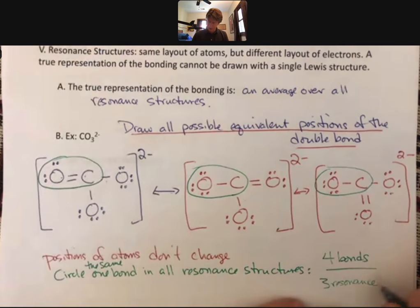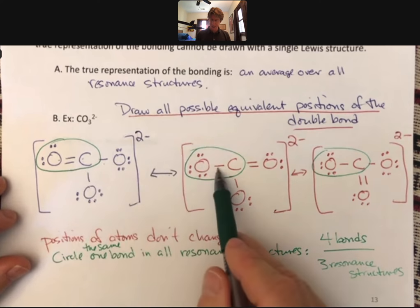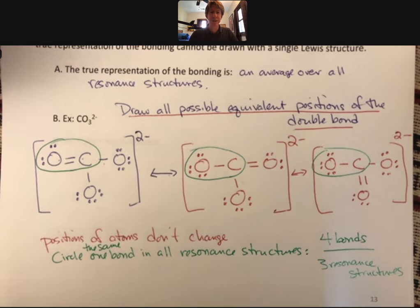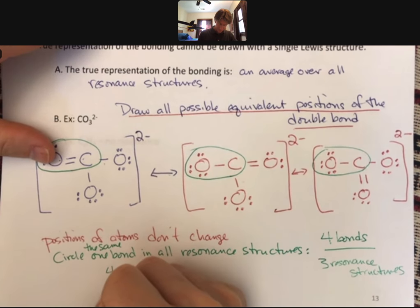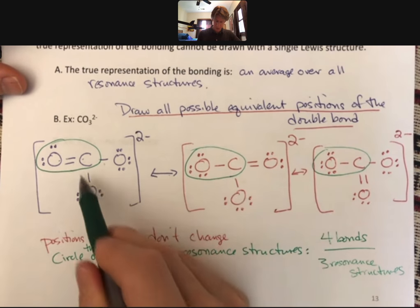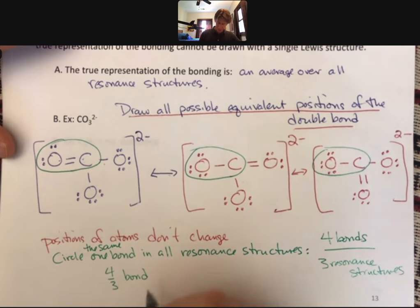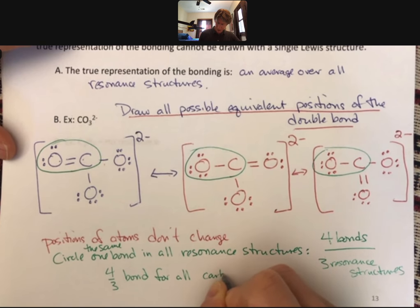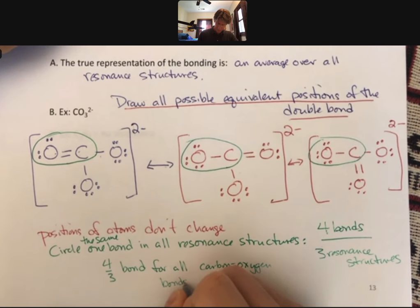And yes, I'm running out of green ink. And so what we would say is that this bond that I've just circled is somewhere between a single and a double bond. And what we would actually call it is we would call it a four-thirds bond. Meaning, a single bond would be one, a double bond would be two, and this is somewhere between them. And then if we do the same thing for the other ones, we'd have one, two, three, four. What we see is that all of these bonds are four-thirds bonds. So four-thirds bond for all carbon-oxygen bonds in carbonate.